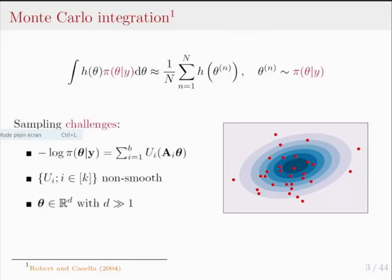There are challenges associated with sampling tasks. Your posterior distribution could be very complicated. For instance, if you take the negative log of your target posterior density — this negative log, also called the potential energy — it could have a composite form written as a sum of B terms, B potentials U_i, which might involve matrices A_i acting on your parameter of interest, adding difficulty to sampling from this posterior.